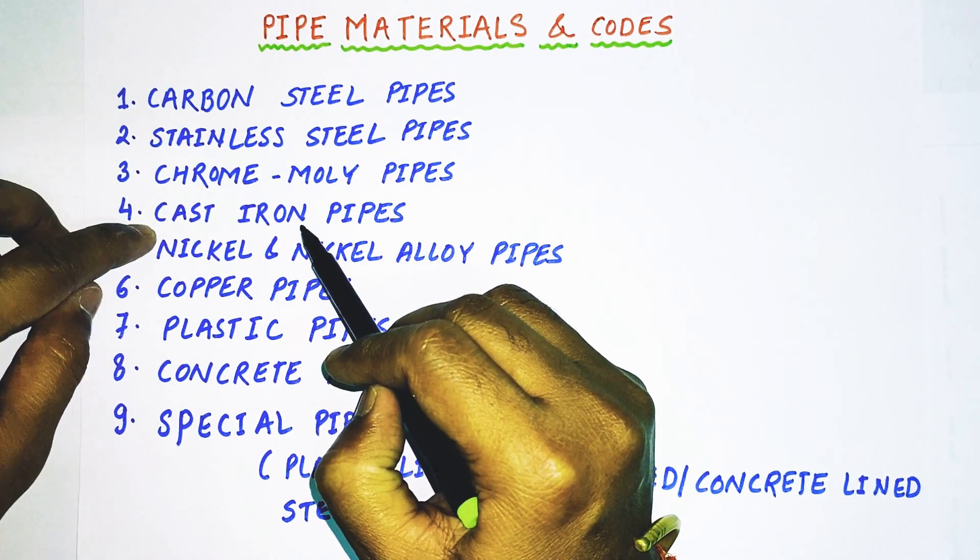In cast iron pipe we have two important materials. First one is ductile iron, also called DI pipes. This ductile iron material is used in underground piping and fire protection systems. Then we have dure iron pipe. This is actually having high silicon content, that is why it becomes very hard and hence it has strong resistance to commercial acids also.